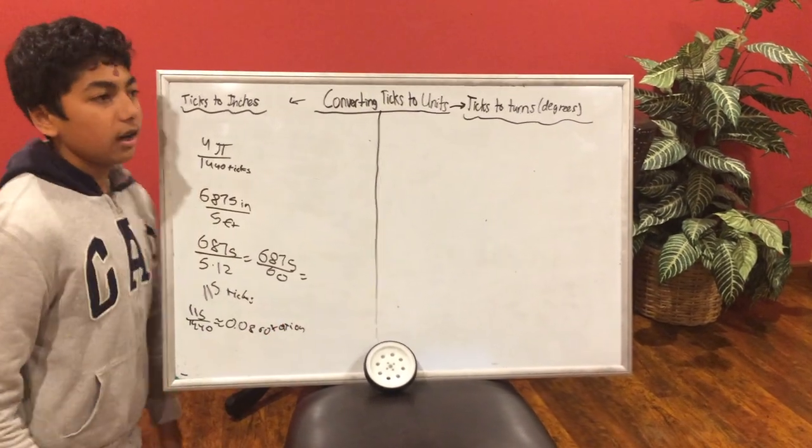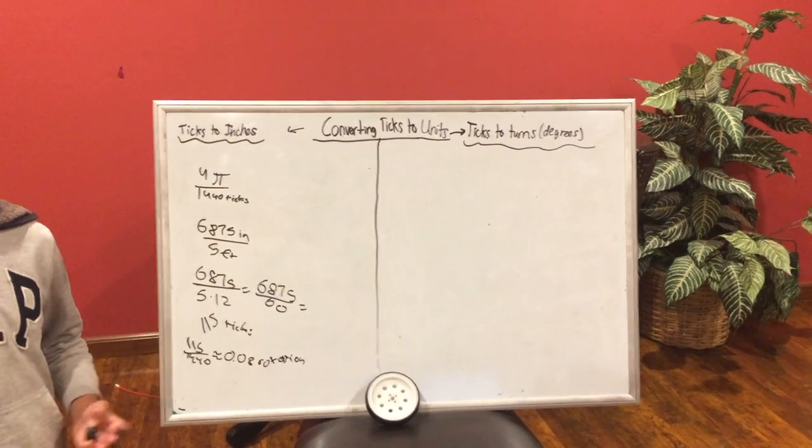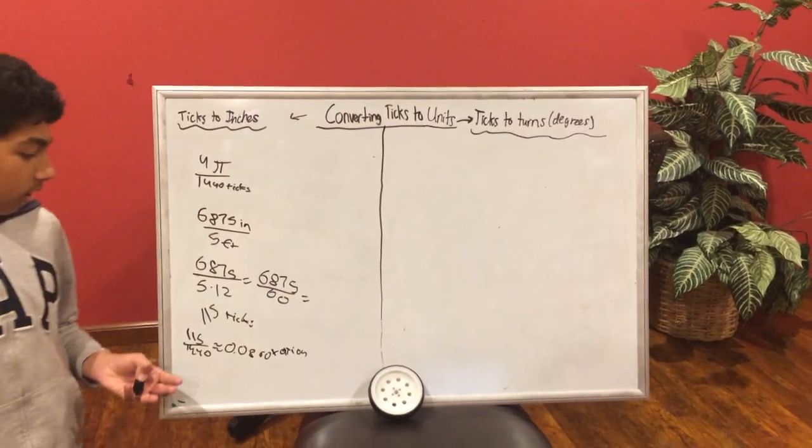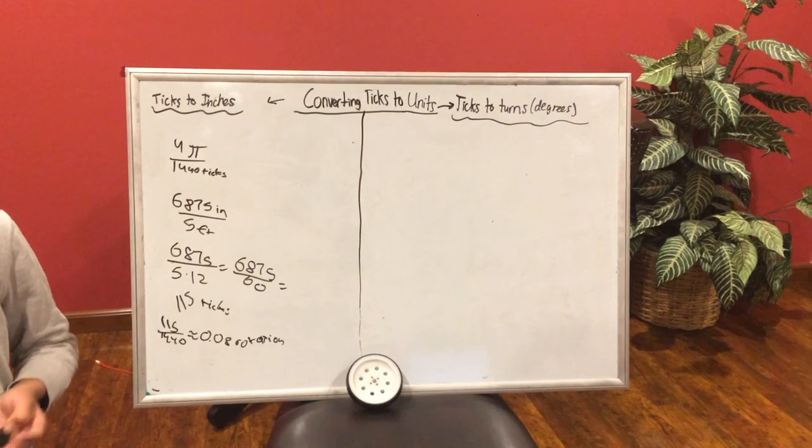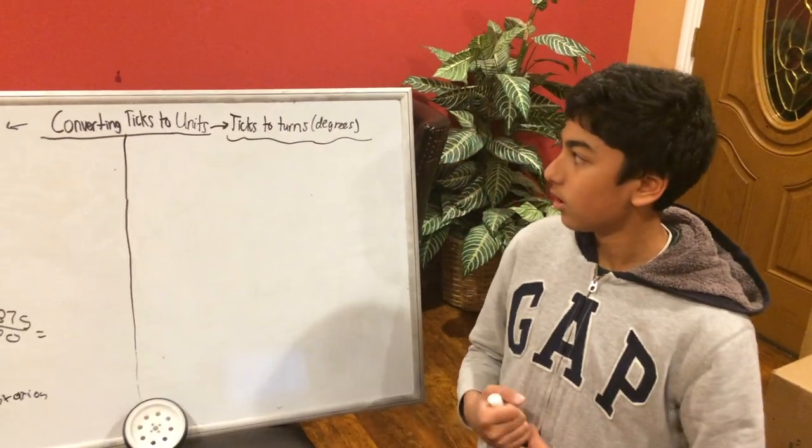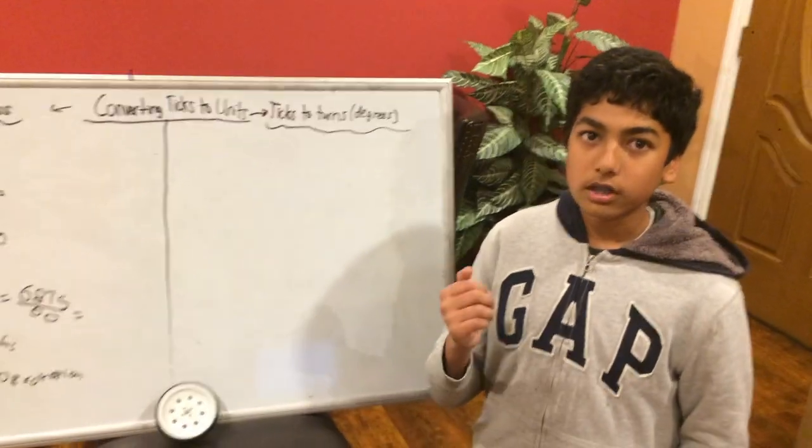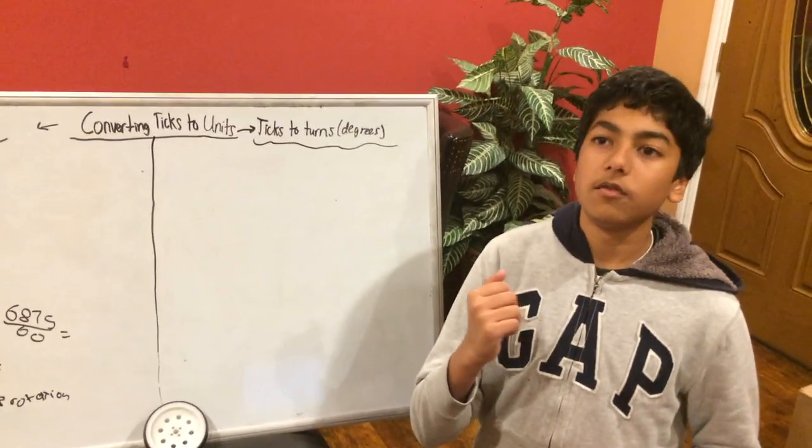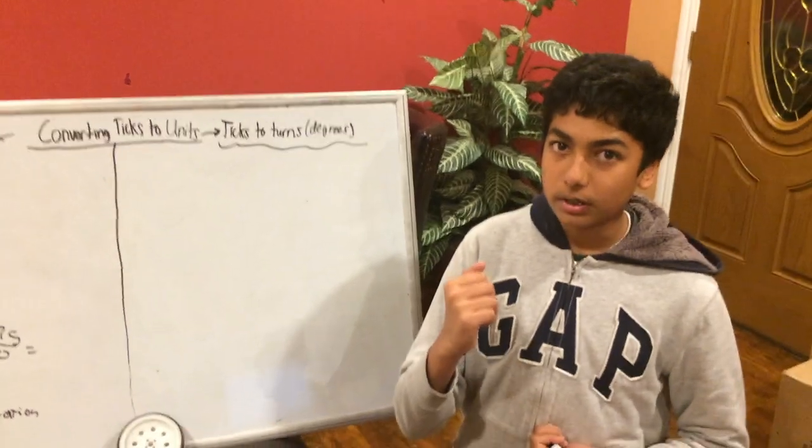So now you know the amount of ticks per inch and the amount of rotation it takes to make 1 inch. So let's talk about how to convert ticks to turns. Simply, we are going to be converting the ticks for a 90 degree turn.